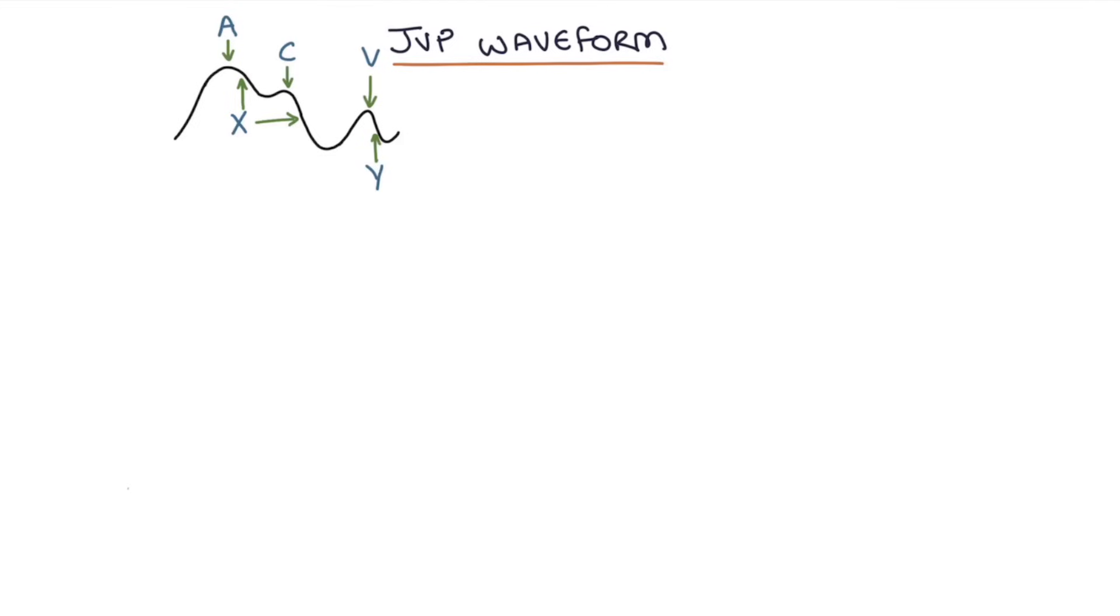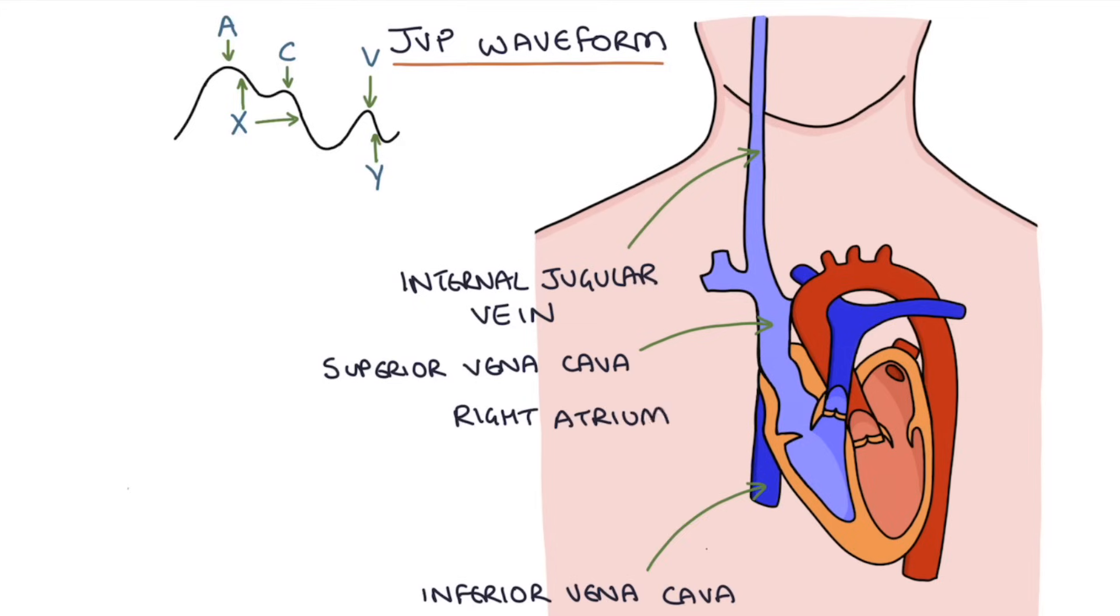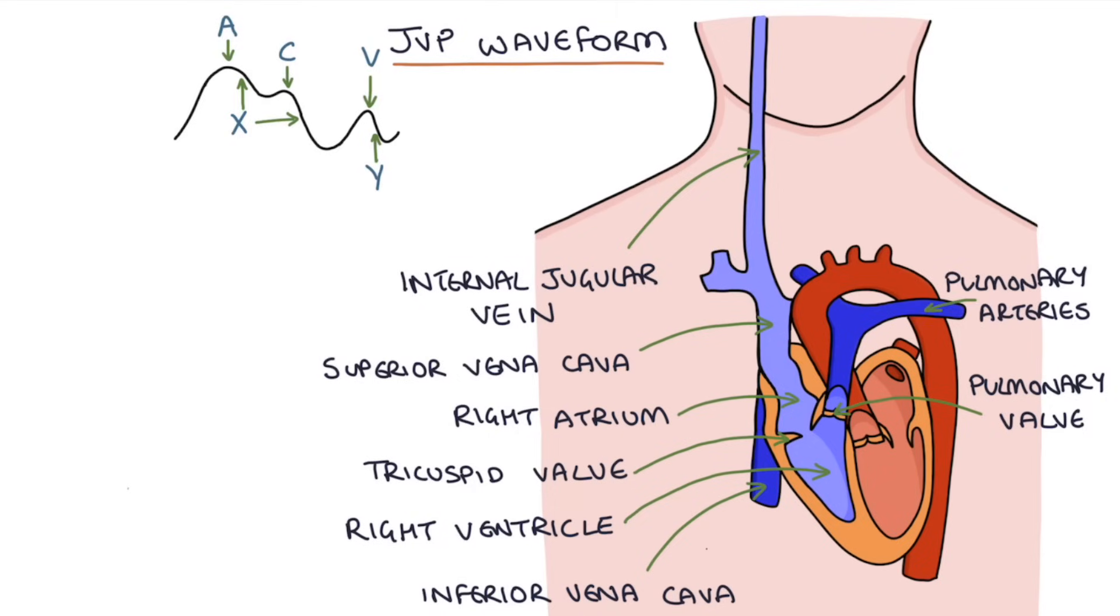So let's go through each wave and what is happening during them as far as the right atrium. To do that, I want to use this simplified diagram that shows the internal jugular vein in the neck which drains into the superior vena cava. Underneath you can see the inferior vena cava, then there's the right atrium, tricuspid valve, the right ventricle, and the pulmonary valve that leads into the pulmonary arteries that go into the lungs.